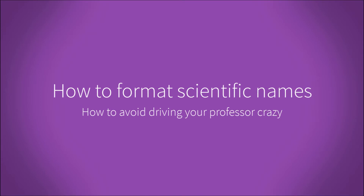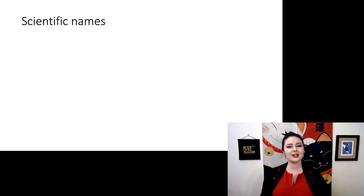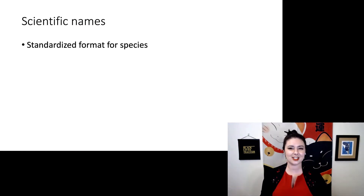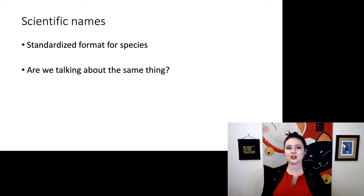Science is very particular with a lot of things, definitions especially. We are particular about definitions because we want to make sure we're always talking about the same thing. And one of the things we want to be very particular with is how we name different biological species. This is something near and dear to my heart, so let's make sure to get this right. Right now we're talking about scientific names for different species, and we want to have a standardized format so we make sure we're talking about the same thing — because otherwise that can cause problems.